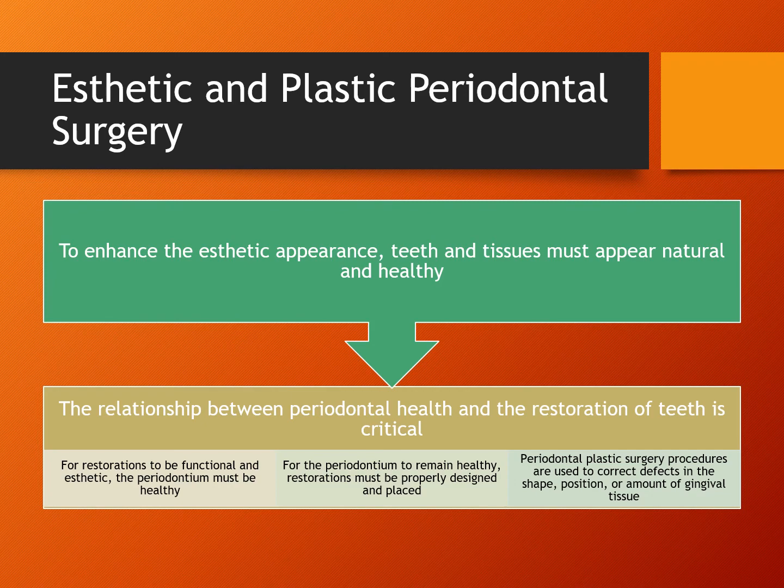Let's talk about aesthetic and plastic periodontal surgery. Today, more and more general dentists are providing aesthetic and cosmetic procedures, including resin restorations, porcelain veneers and crowns, and dental implants. To do these procedures, the relationship between periodontal health and the restorations of teeth is critical. This involves making sure the periodontium is healthy, and for the periodontium to be healthy, restorations must be properly designed and placed. The general dentist and periodontist must work closely together to provide optimum periodontal health and focus on the aesthetics and function of the restorations.